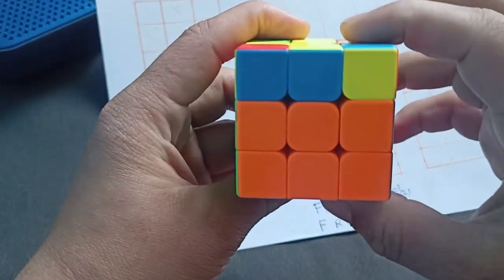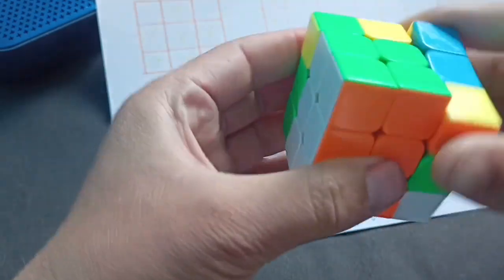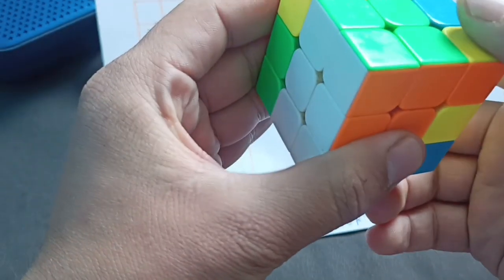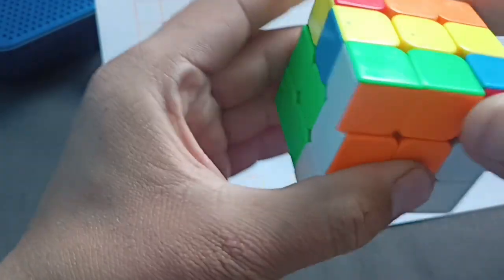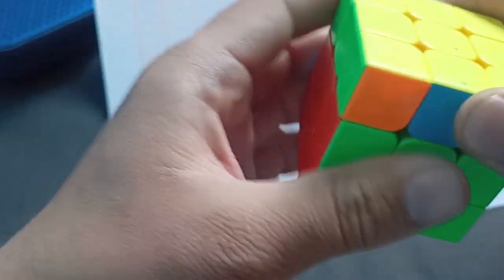The algorithm is front, right, up, right, down, front. Front, right, up, right, down, front.